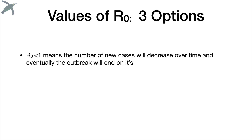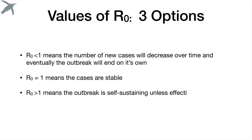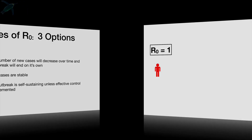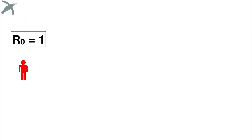There are three options for the values of R-naught. It can be less than one, which means the number of new cases will decrease over time — that is fantastic. It can be equal to one, which means the case number is stable over time. Or it can be greater than one, which means the outbreak is self-sustaining unless control measures are implemented. We're going to look at all three cases in a variety of ways.